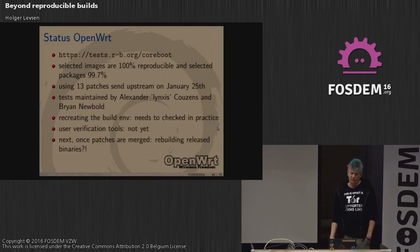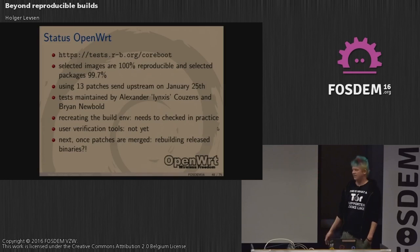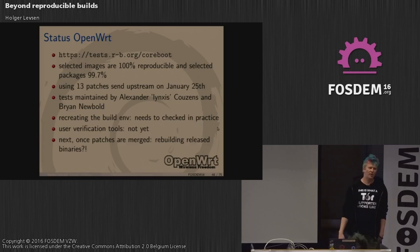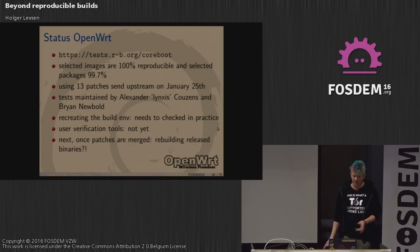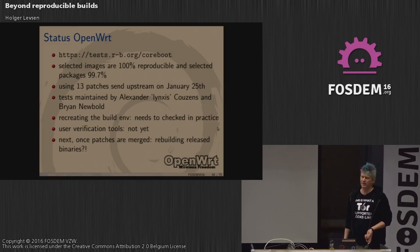For OpenWRT, we built three architectures and about 100 packages, most of which are reproducible with 13 patches sent upstream last week by Alexander and Brian Newbold. Whether one can recreate the build environment for OpenWRT as it was in the past still needs to be tested. We could also just build once and compare with the released binaries, but that hasn't been done yet.